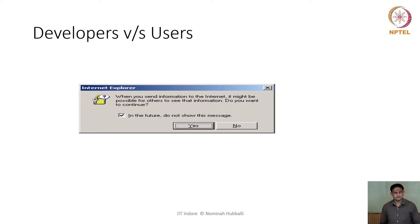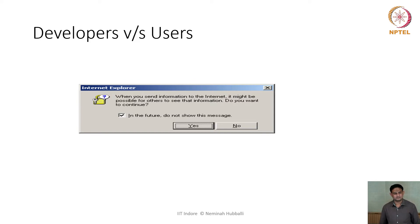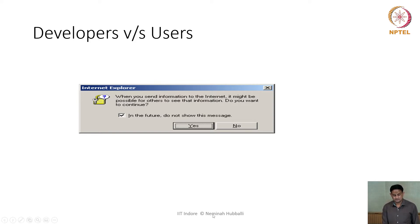I want to begin this lecture by showing a couple of screenshots. The first is a screenshot of an alert shown by Internet Explorer. It says that when you send information to the internet, it might be possible for others to read that information, and it asks the user whether they want to continue. It also shows an option — a checkbox — that by default is checked to not show this message in the future.